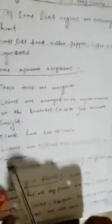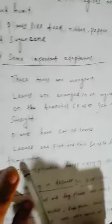D — leaves are flat and thin so as to help in transpiration. Transpiration means the process of giving out water vapor from the stomata. Stomata are tiny pores present in the leaves. E — transpiration helps in keeping the plant cool, not hot.